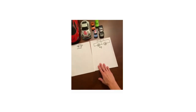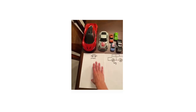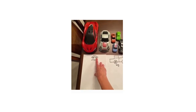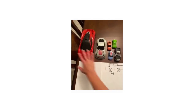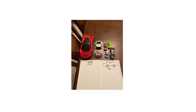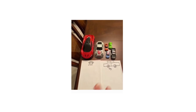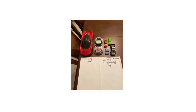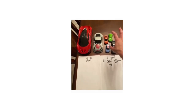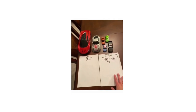Now let's go to the next activity. Here we have two cardboards — one with a small car and one with a big car. And here we have many cars with different sizes; some are small and some are big. We are going to sort the cars by size, putting all the small cars in one group and all the big cars in another.